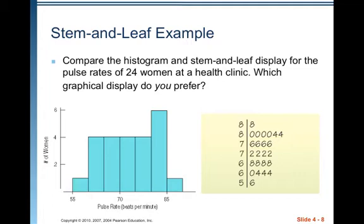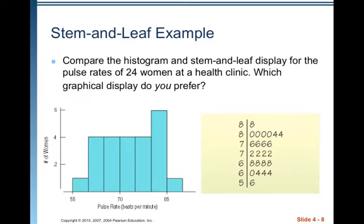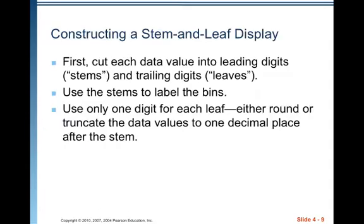Below that we have pulses of 80, 80, 80, 80, 84, 84, then 76, 76, 76, 76, 76, and then 72, 72, 72, 72. This is a split stem display — for each stem there are two horizontal rows. The top row is for digits 5 through 9 and the lower one is for digits 0 through 4. Use the stems to label the bins and use only one digit for each leaf, rounding or truncating to one decimal place after the stem. It's really nice when you have values like pulse rates with just a tens and ones digit.